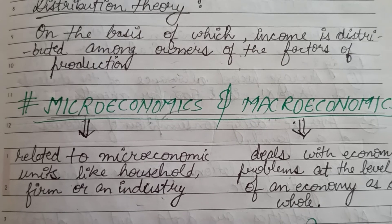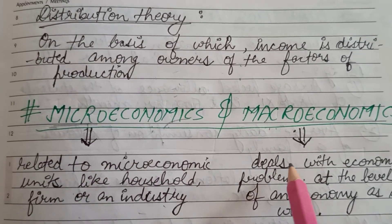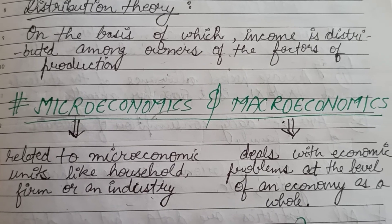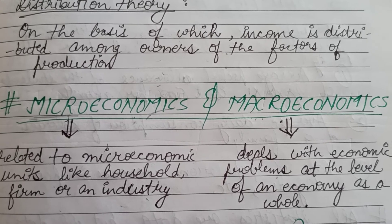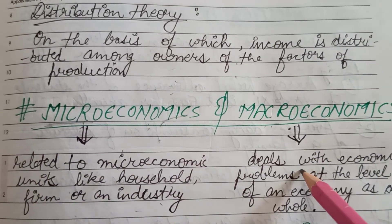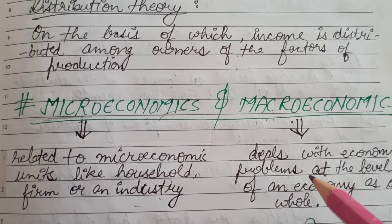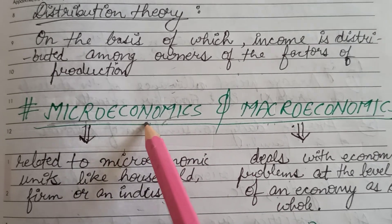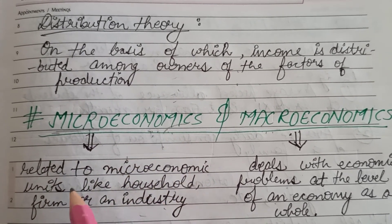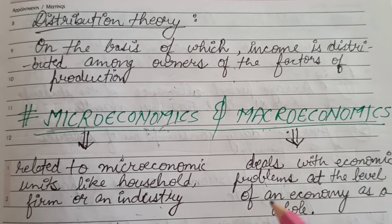If we talk about individual demand — that is, how much an individual is demanding at a certain price — that will come under microeconomics. On the other hand, if we talk about the economic problem of the whole economy, such as the poverty situation of a country, gross domestic product or GDP of a country, or the employment situation of a country, all that will come under macroeconomics. So economics has two branches: microeconomics studies economic problems at the household, firm, or individual level; macroeconomics deals with economic problems at the level of an economy as a whole.